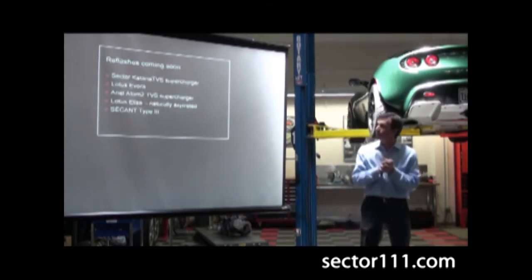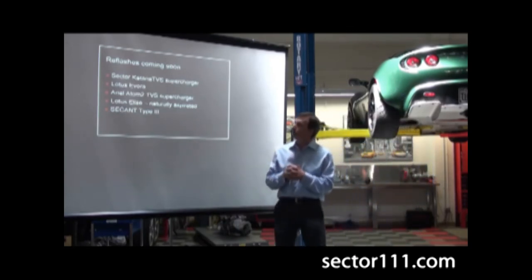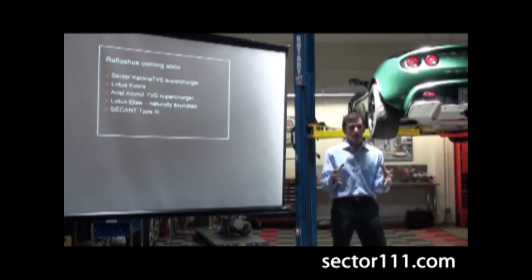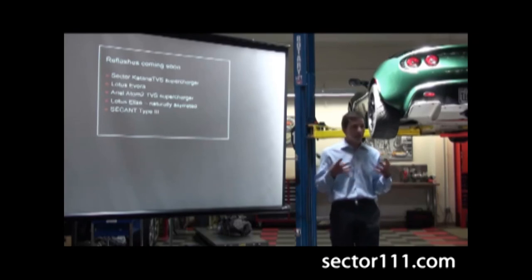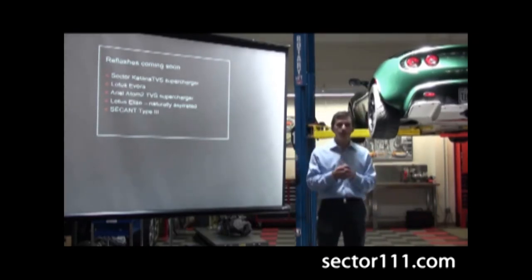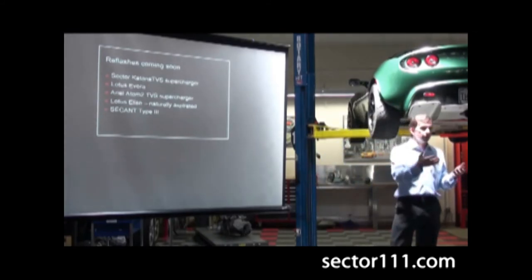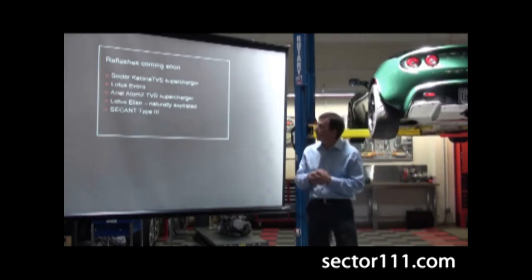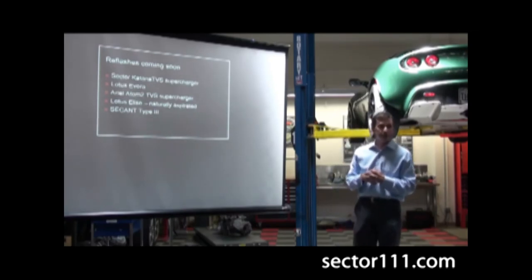Stuff we have coming soon - these are reflashes. The Katana TVS supercharger is larger than what you see on most cars. The TVS is a 1.32 liter instead of 1 liter, and it also has the four lobe style lobe inside the supercharger. So it's super efficient. It's a baby brother of what's on the Corvette ZR1, that's a 2,300, this is a 1,300. We'll have that coming soon, and that will be on Sector's green Elise in the next few weeks.